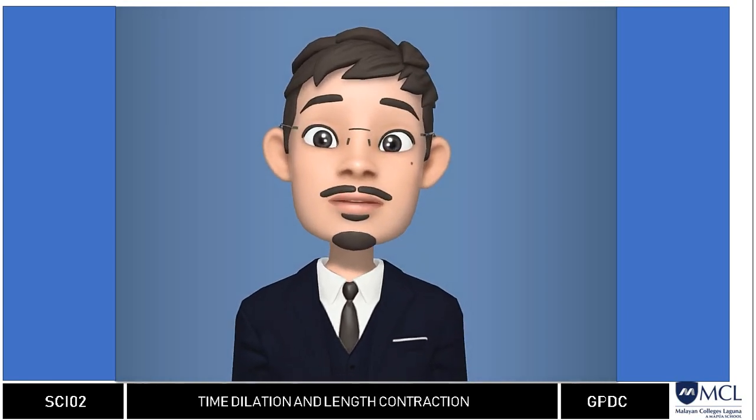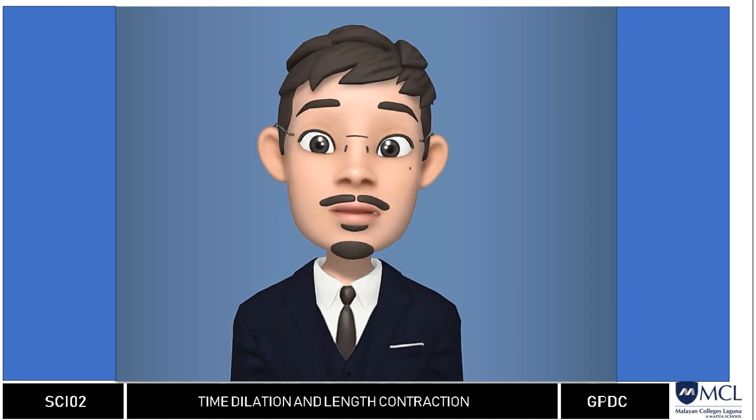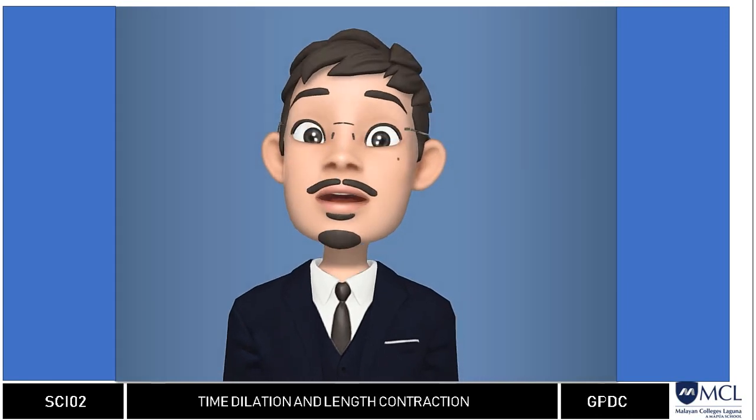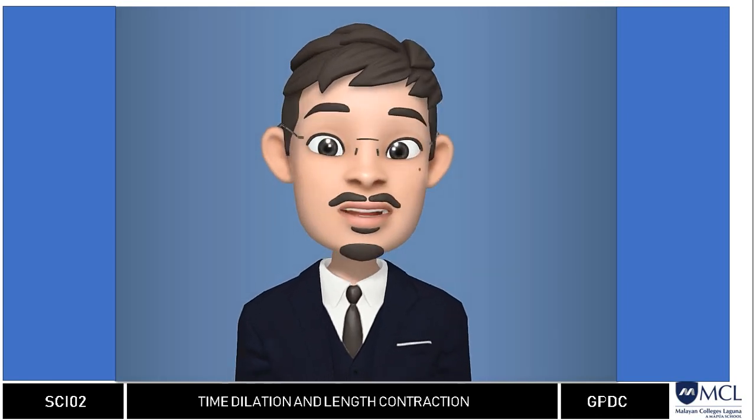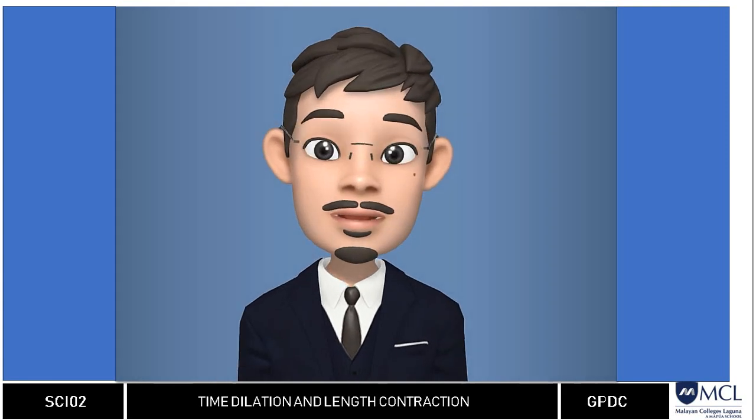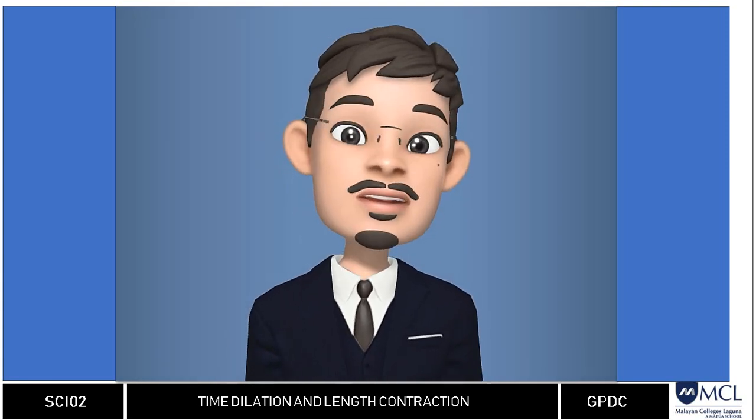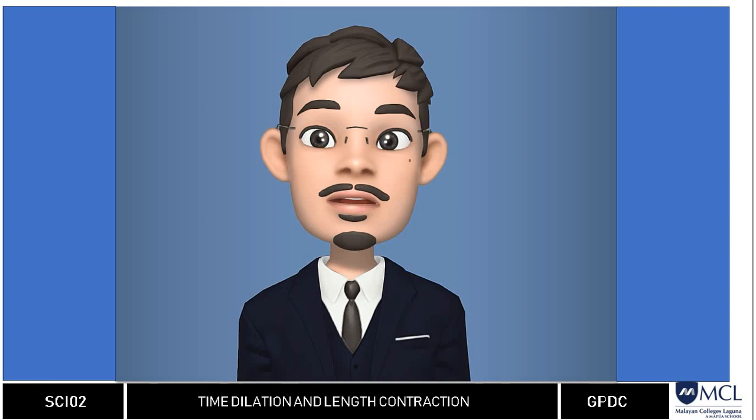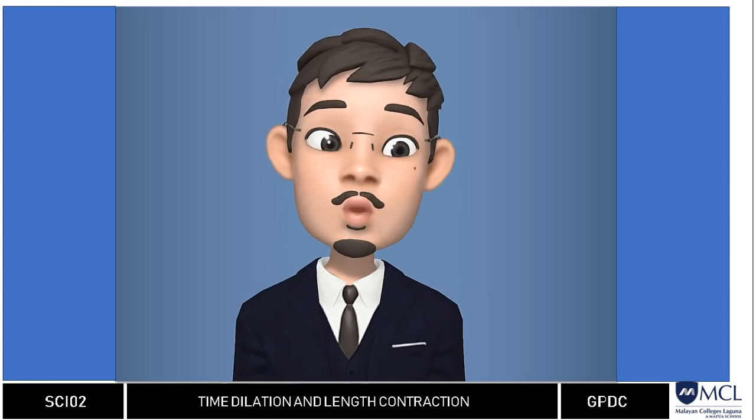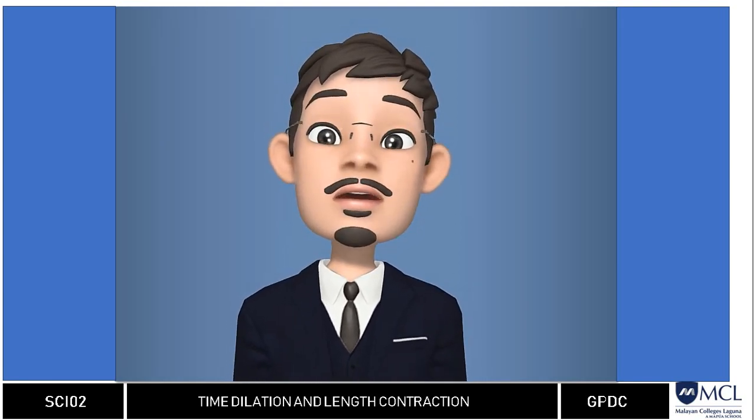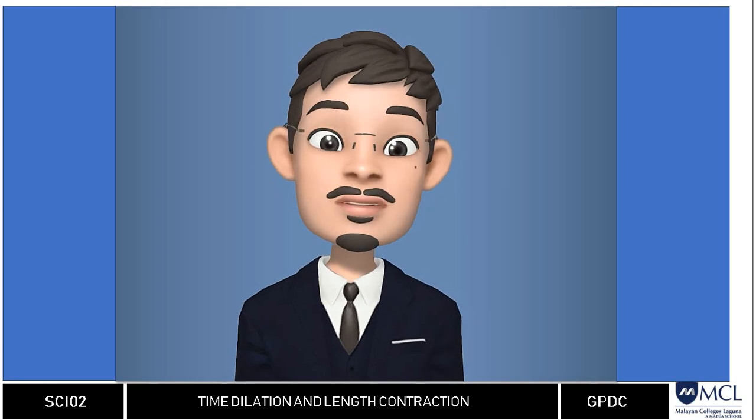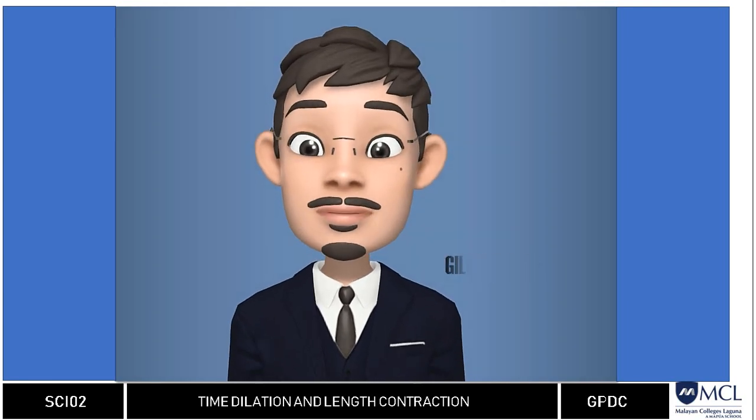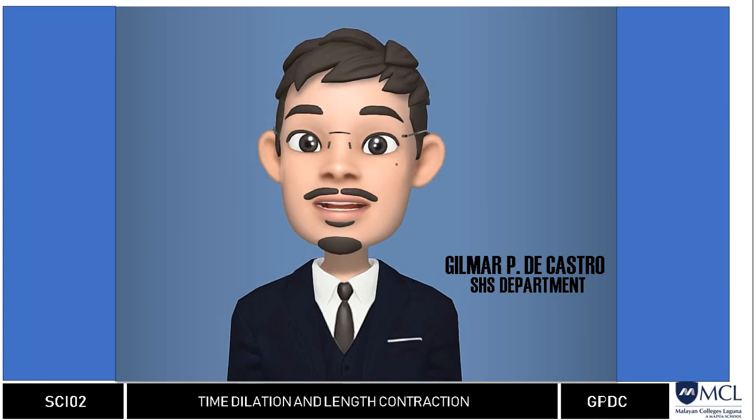I also have some drills uploaded in your BBL for you to practice on to at least assess your understanding of this topic. The next topic is the general theory of relativity, which Einstein used to describe motions that cannot be explained by the special theory. Once again, I am Gilmar DeCastro and see you in the next video.